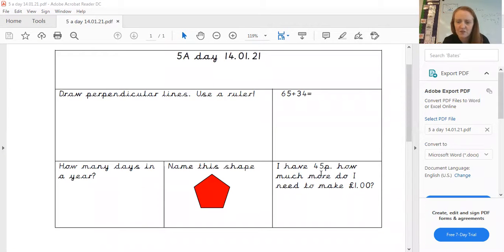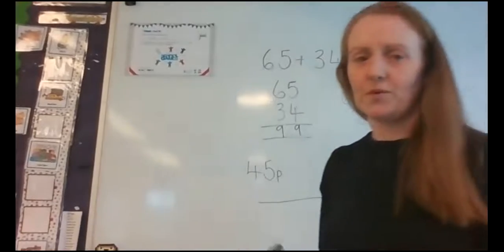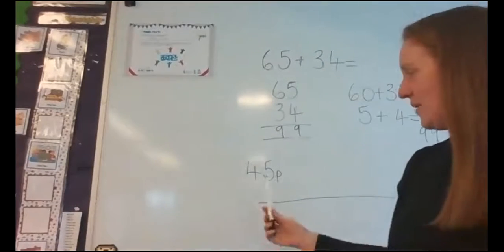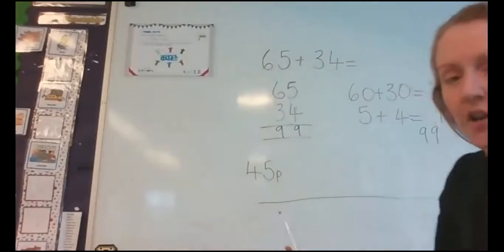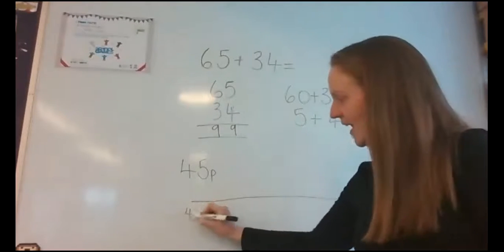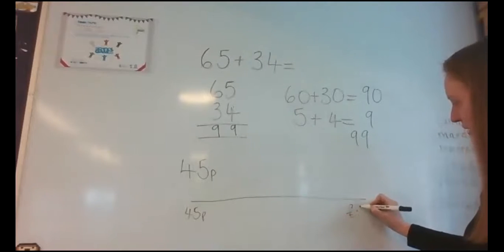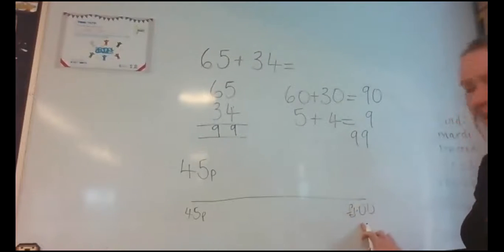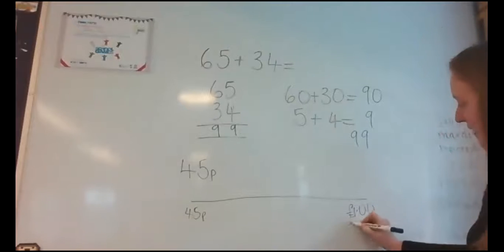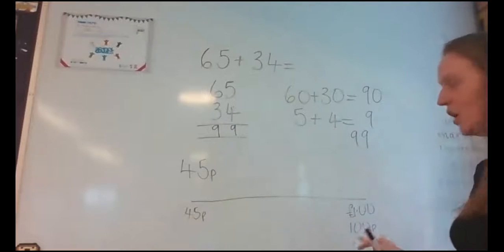Okay, so moving back on. I'm going down to this one down here. So I have 45p. How much more do I need to make a pound? So if I stop the share there. We did this on Tuesday. Our number bonds to 100. So your written method, if you needed it, on a number line. I've just drawn a real quick number line here. 45p goes at the end. And we are going all the way here to one pound. Now, if you know about money, one pound is equal to 100 pennies.